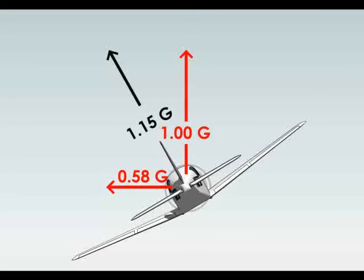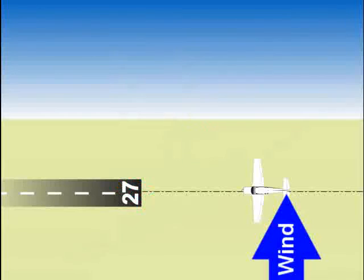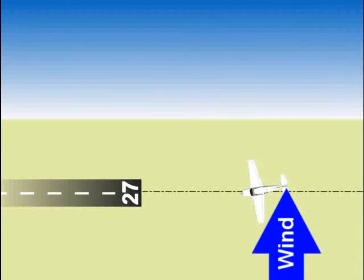This will cause the airplane to start sliding sideways to the left. Unfortunately, the airplane has a vertical tail that resists sideways motion. It will swing the nose to the left, too.